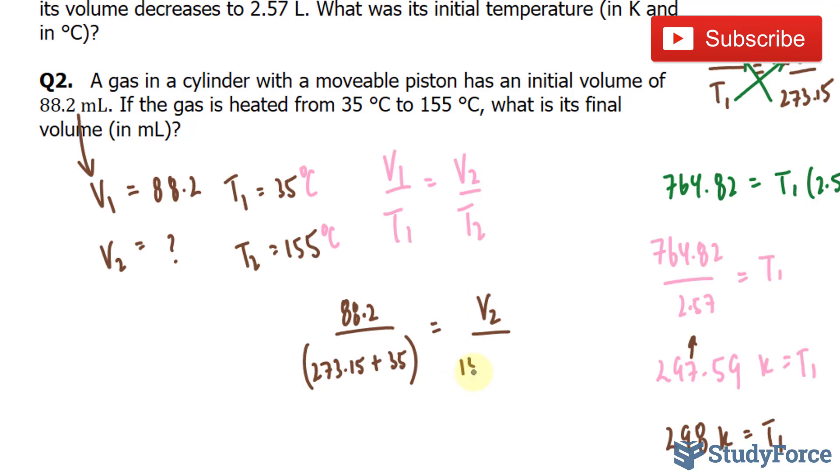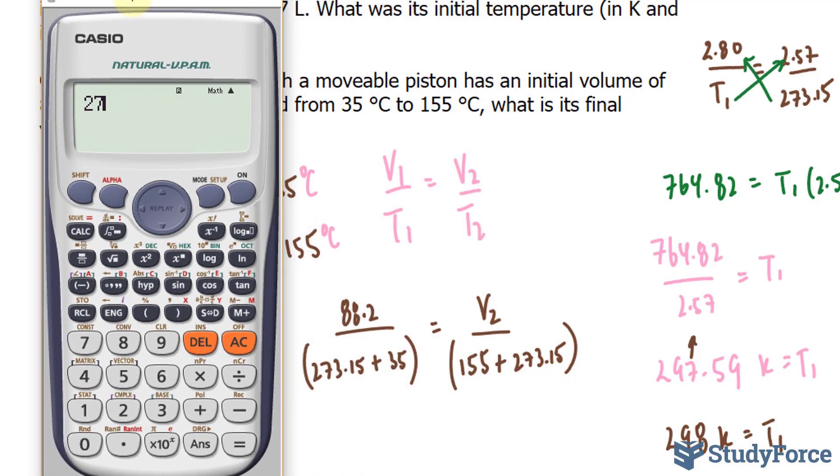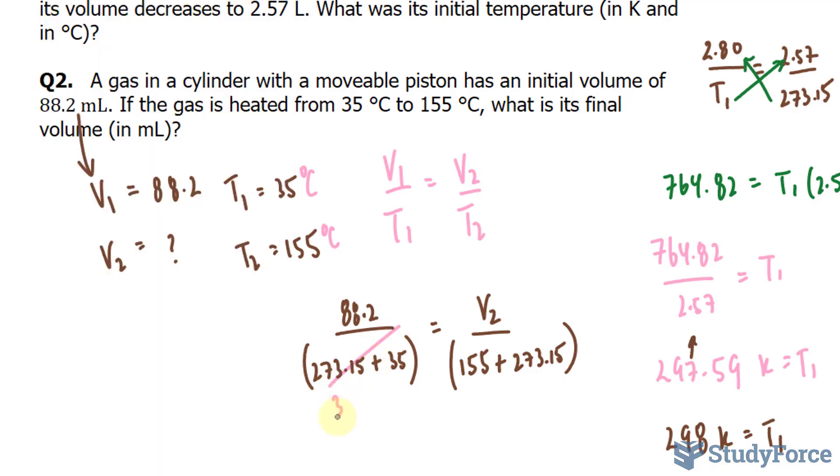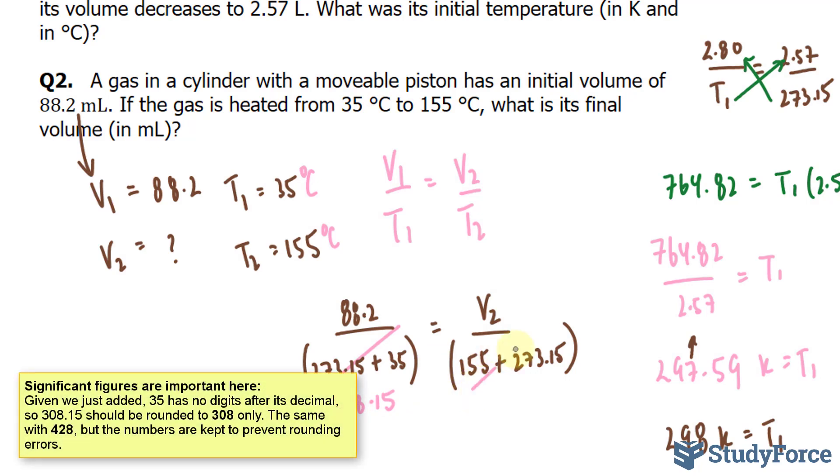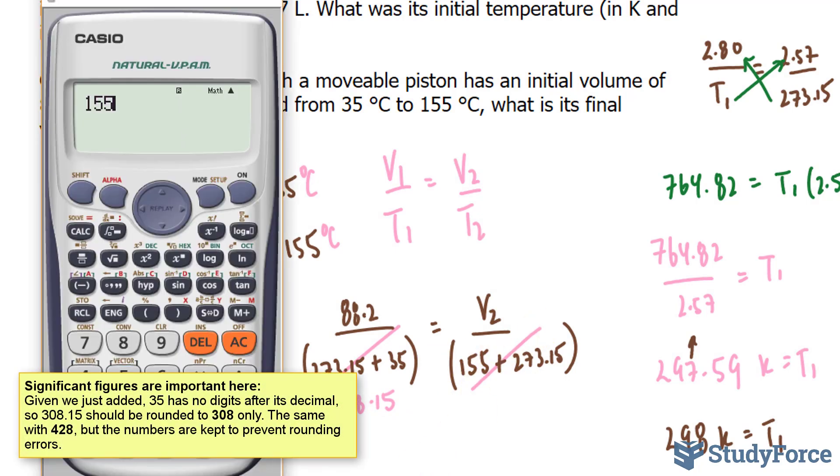Using our calculator, 273.15 plus 35, that's 308.15. I'll write that down so I won't forget, 308.15. And this becomes 155 plus 273.15. I get 428.15.